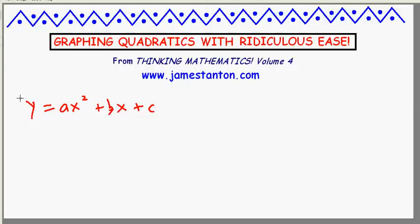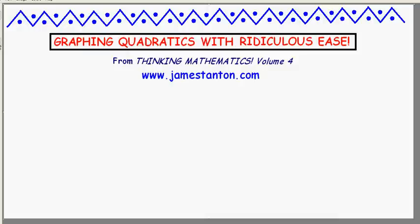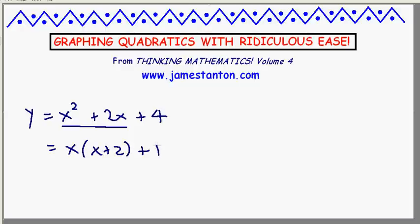And to show you what I mean, let's do a very specific example under the assumption we're at the point that we do believe it's going to be a u-shaped curve. Suppose we're asked to graph y equals x squared plus 2x plus 4. Well, here's my trick. Pull out a common factor of x from the first two terms. We write this as x times x plus 2 plus 4.